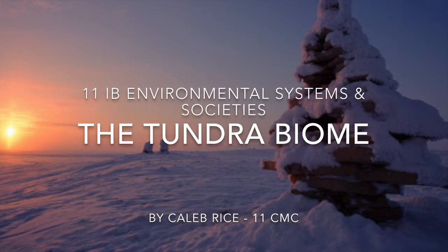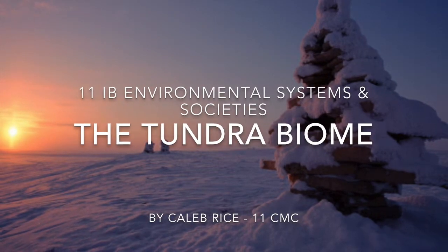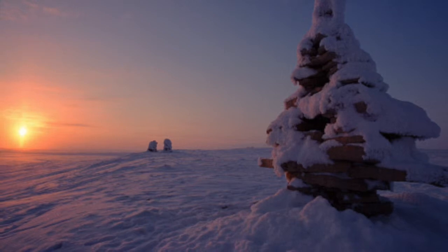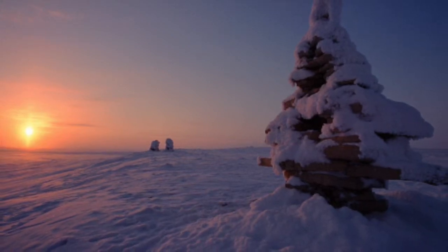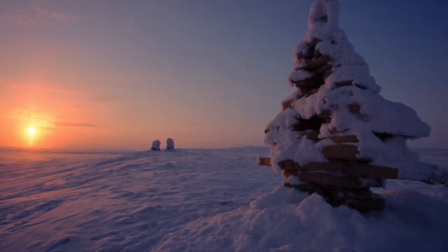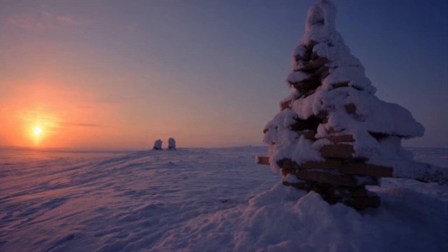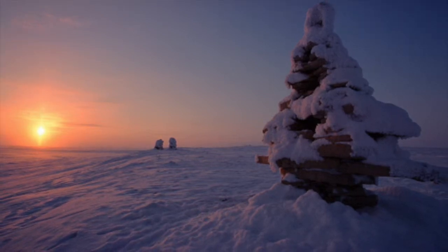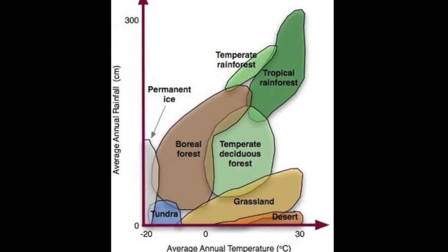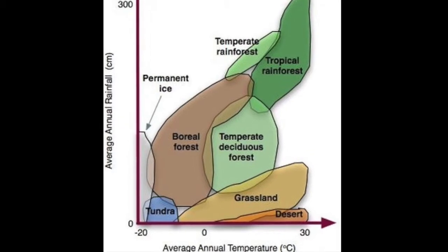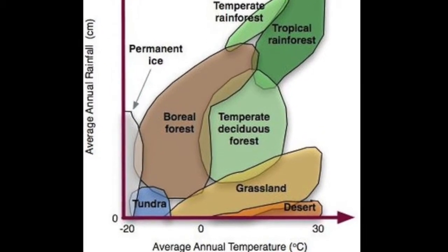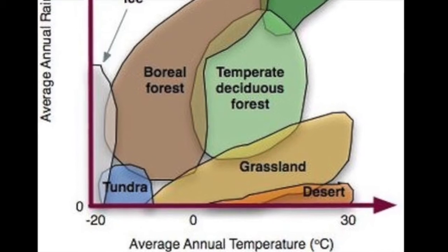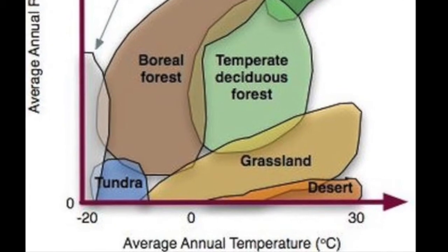A biome is a collection of ecosystems that share similar climatic conditions and so give rise to similar vegetation patterns. Tundra is the world's coldest and driest biome as well as the world's youngest, forming only 10,000 years ago. The English word tundra comes from the Finnish word tunturia, meaning treeless plain.